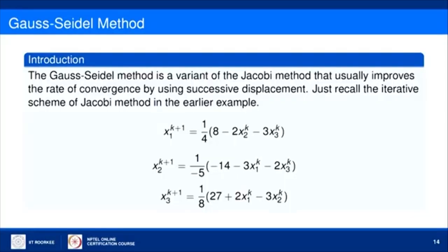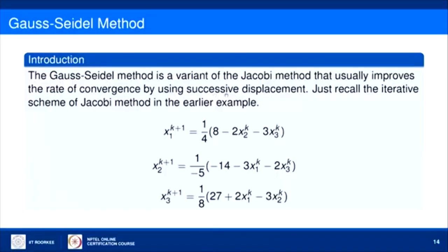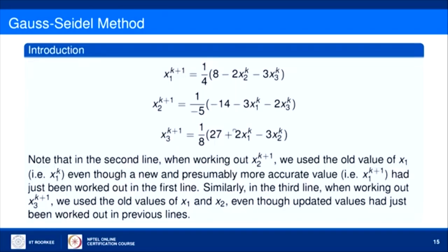The next method in this category is the Gauss-Seidel method, which is a bit better than the Jacobi method in terms of convergence. The Gauss-Seidel method is a variant of the Jacobi method that usually improves the rate of convergence by using successive displacement, whereas Jacobi uses simultaneous displacement. Recall the iterative scheme of the Jacobi method from the earlier example.